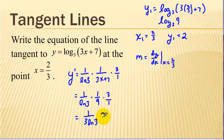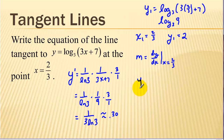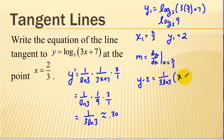Putting that into a calculator, we get approximately 0.30 rounded to two decimal places. Now let's write the equation of our tangent line using the point-slope formula: y minus 2 equals our slope, 1 over (3 ln of 3), times (x minus x sub 1), which was 2/3. We could leave it like that, or distribute and combine like terms, but we'll leave it in this form. We could have also used our approximate value.